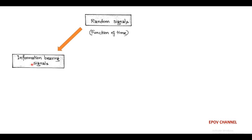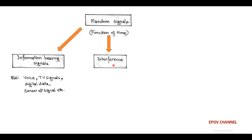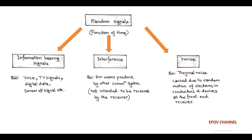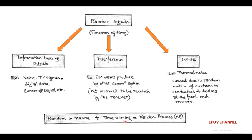First, the random signal is an information-bearing signal such as voice, TV signal, digital data, sensor output signals, etc. Secondly, during transmission, there is a possibility of interference by another electromagnetic wave which is not intended to be received by the receiver. Also, a type of noise called thermal noise is observed due to random motion of electrons in the receiver circuit which consists of conductors and electronic devices. So, the information-bearing signals which are random in nature and also varying with respect to time are collectively called a random process.